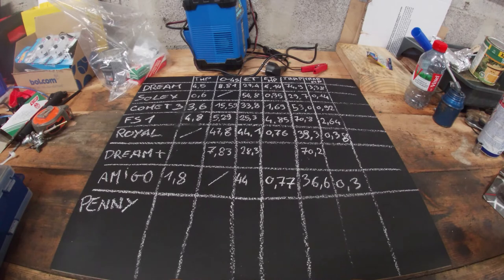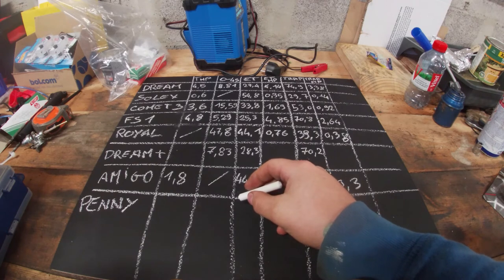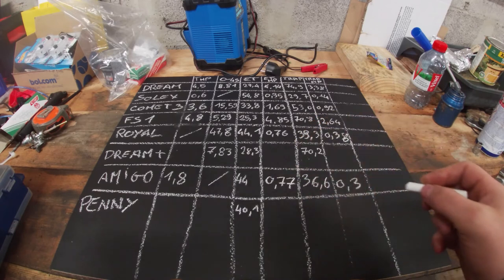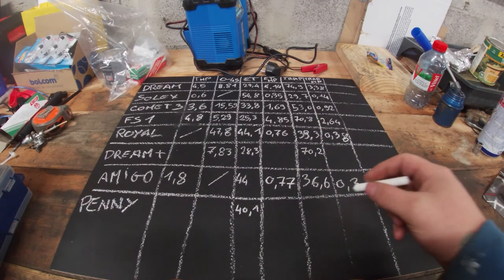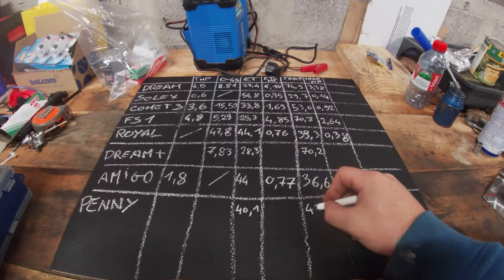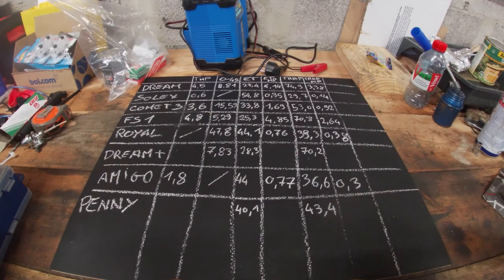So we have the numbers from the quarter mile runs. We did the quarter mile in 40.1 seconds and exited at 43.4 kilometers per hour.